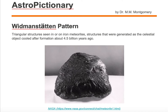The Widmanstätten pattern is commonly seen on the inside of iron-nickel meteorites when the inside is cut and polished. However, these patterns can also be revealed on the surface of the meteorite if the iron-nickel meteorite is sandblasted by winds, as in the case shown here. If you look closely, you can see these triangular patterns.